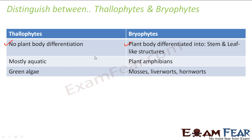In thallophytes there is no plant body differentiation — 'thallo' means undifferentiated. In bryophytes, the plant body is differentiated into stem and leaf-like structures. Thallophytes are mostly aquatic and need water for survival, whereas bryophytes are amphibians — they live both on land and water. Examples of thallophytes include green algae such as Spirogyra, Ulothrix, and Ulva; bryophytes include mosses, liverworts, and hornworts.